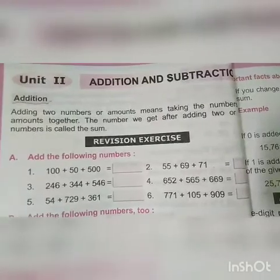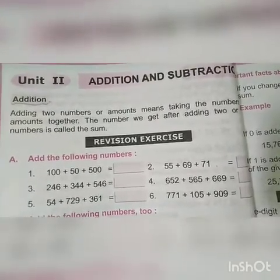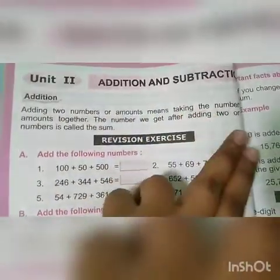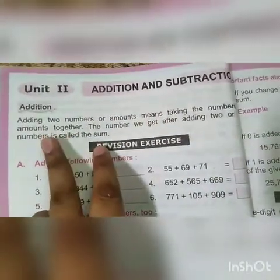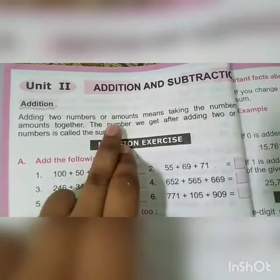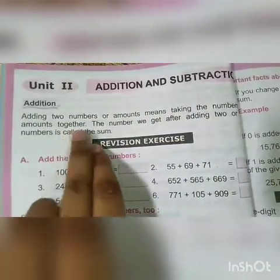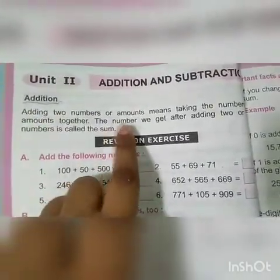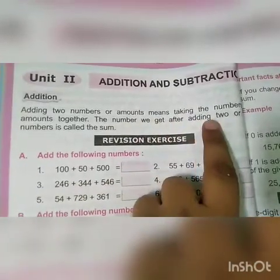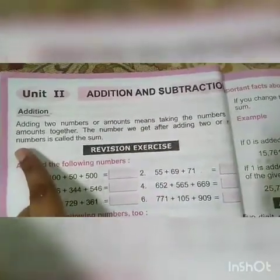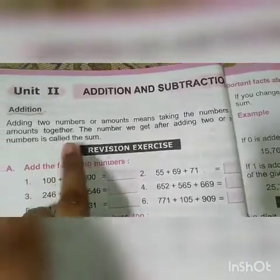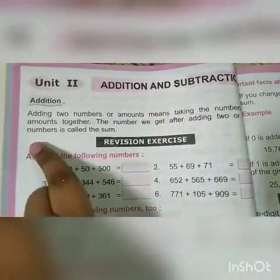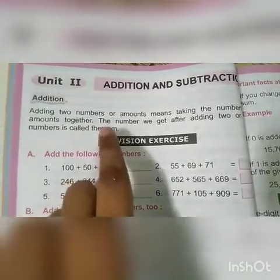In this chapter, we will first discuss addition. What is addition? Adding two numbers or amounts means taking the numbers or amounts together. The number we get after adding two or more numbers is called the sum.